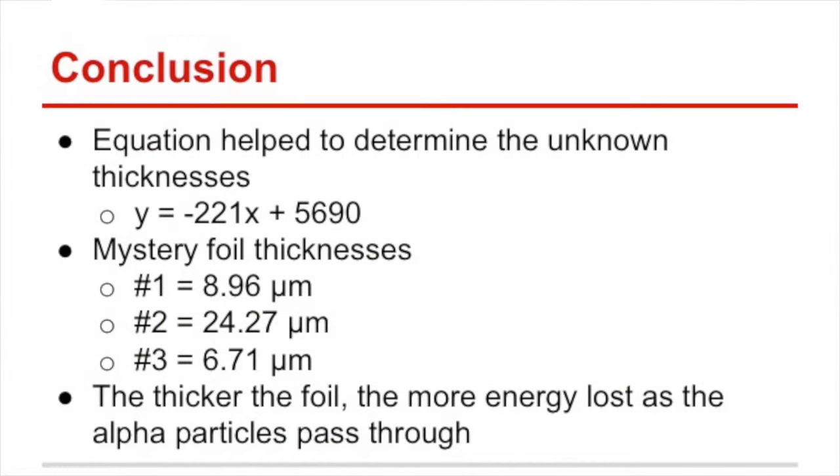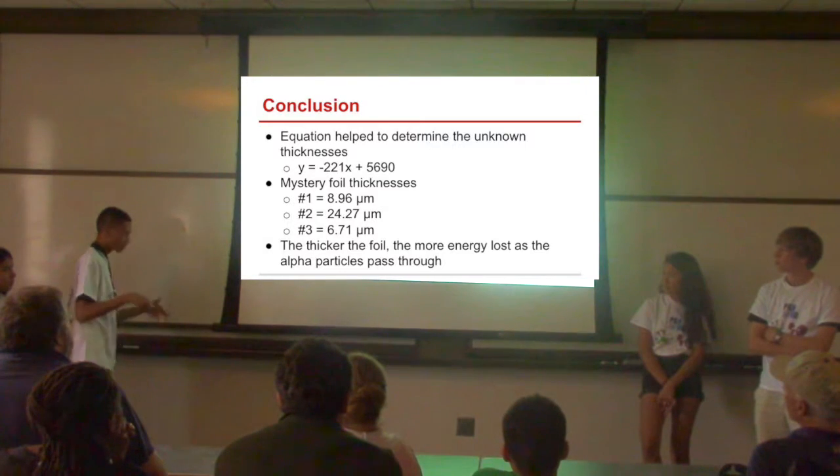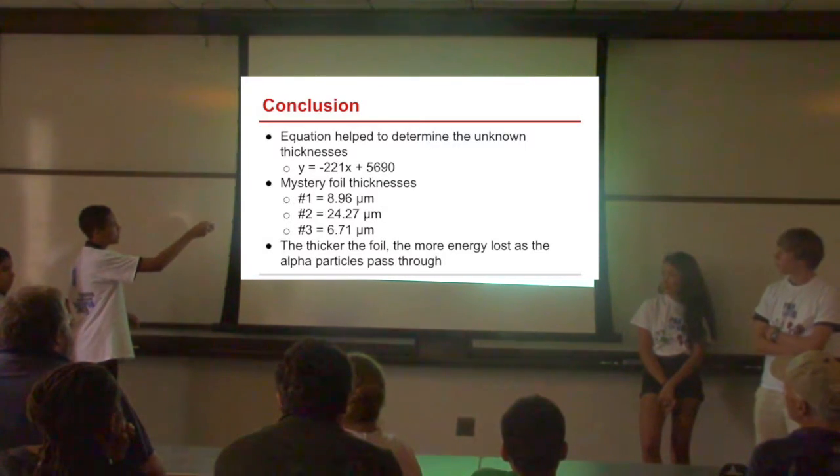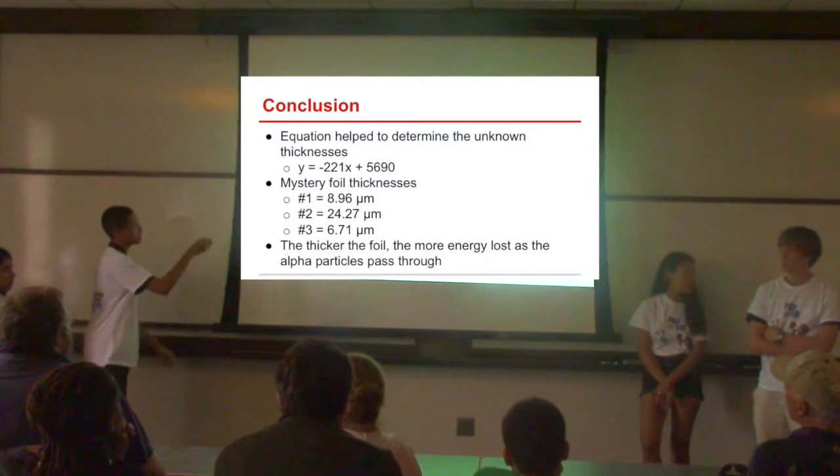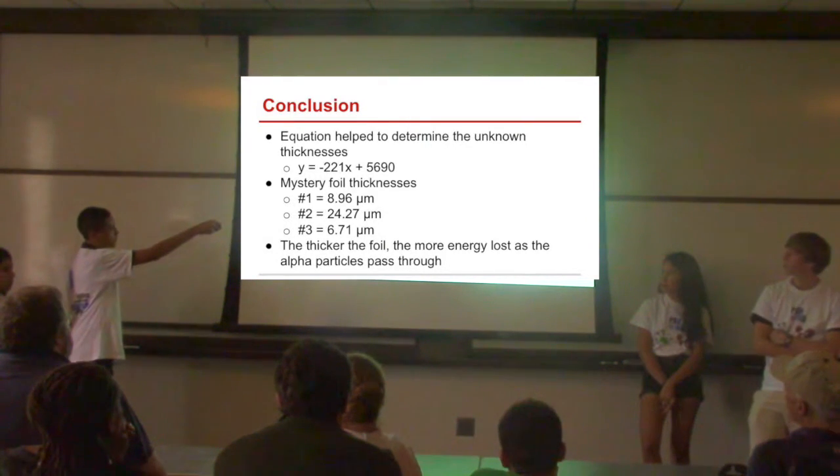As you can see here, the equation we have for the line from the last slide. It's a simple linear equation. The slope of the line here is negative, which shows that with x being the energy and y being the thickness, as the thickness goes up, the energy goes down.